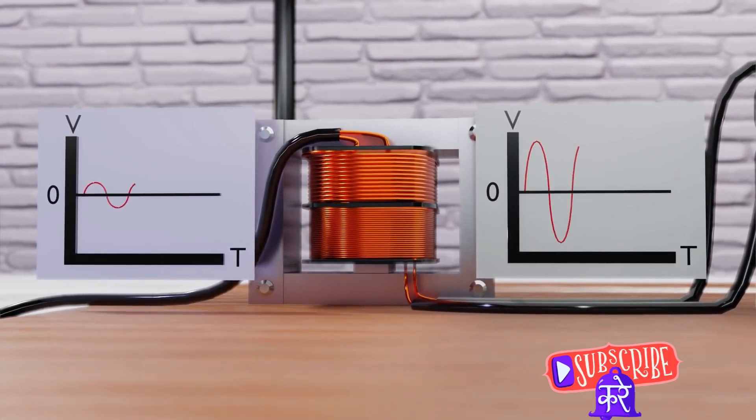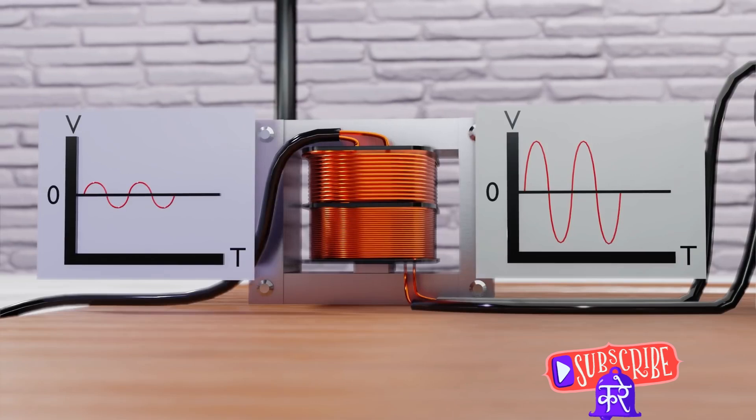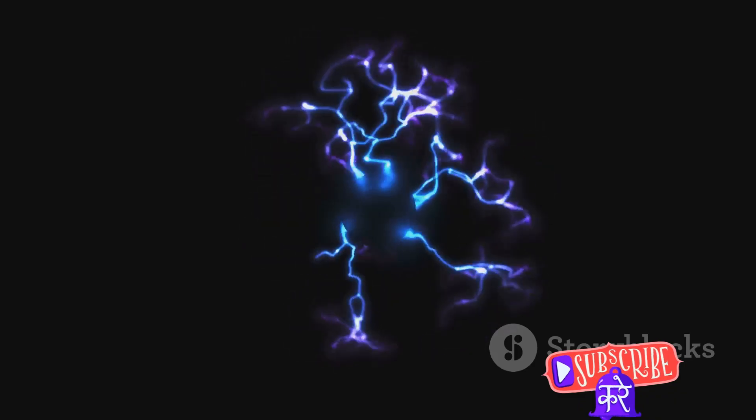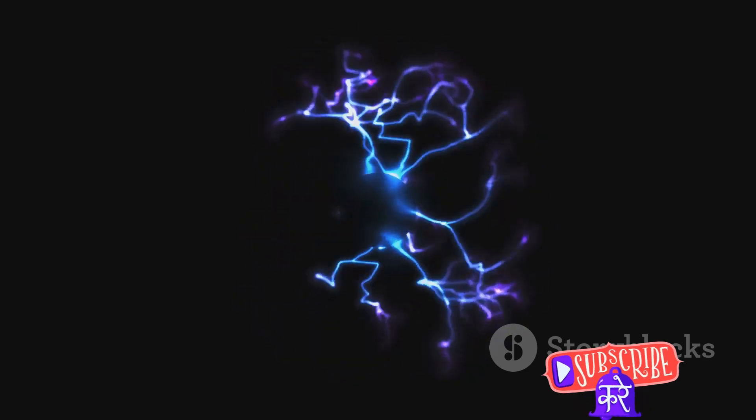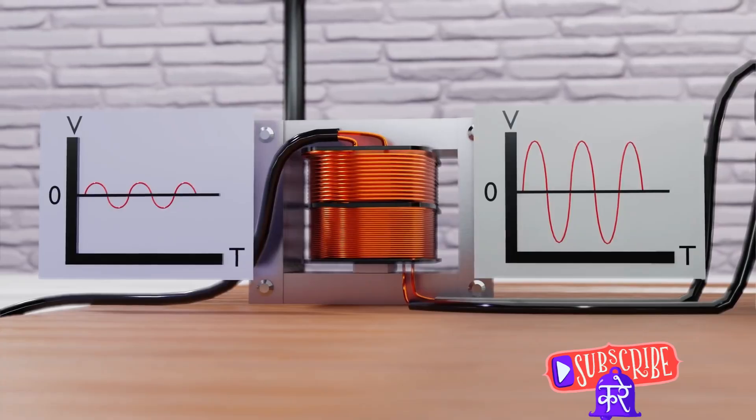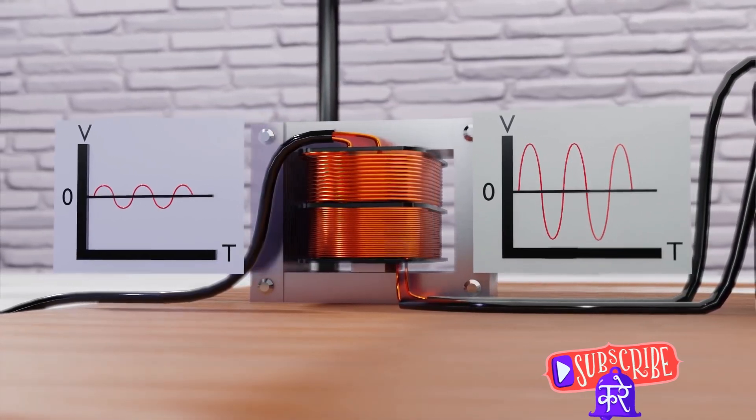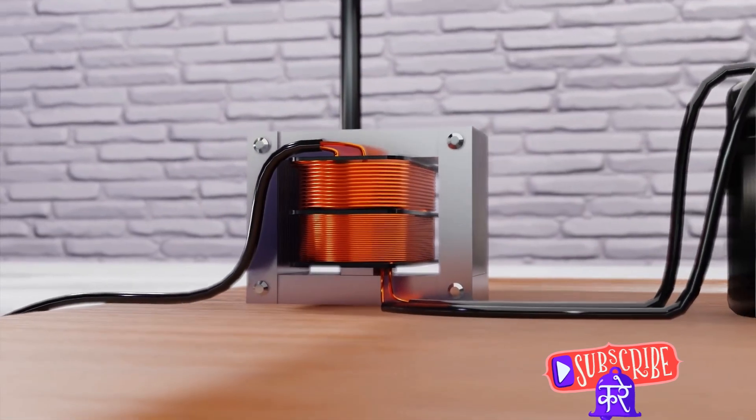Finally, we have the spark gap. This is a simple device that acts as a switch. When the voltage across the spark gap exceeds a certain threshold, it fires, allowing current to flow from the primary coil to the secondary coil. This sudden flow of current is what creates the Tesla coil's characteristic spark.